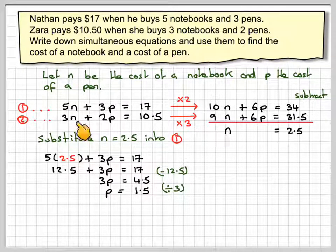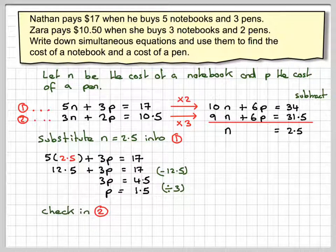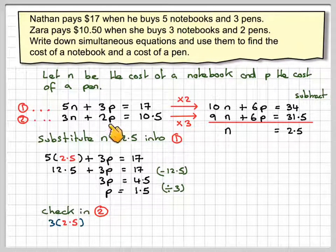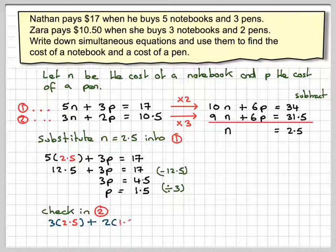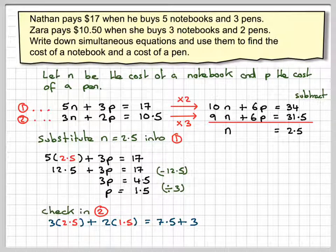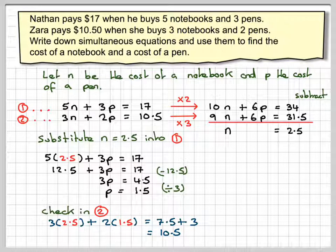We should just check in equation 2. So checking in 2, we're going to get 3 times N, so it's 3 times 2.5 plus 2 times P, which is 1.5, which gives me 7.5 plus 3, and 7.5 plus 3 gives me 10.5, which is what I wanted, so we know we're correct.